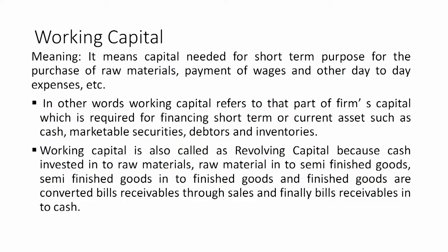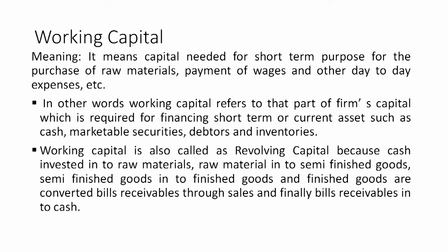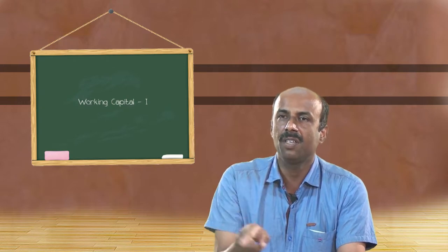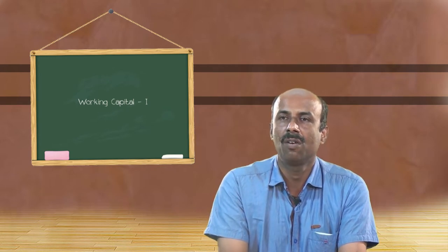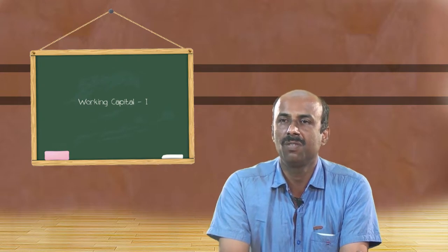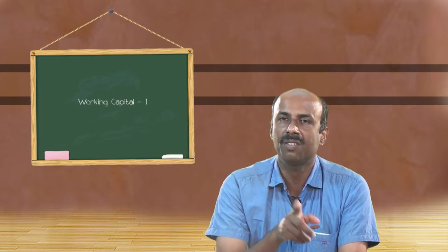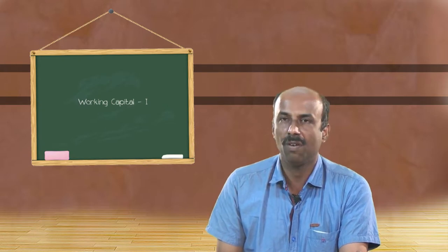Working capital is also called revolving capital, because cash is invested to purchase raw materials; raw materials are converted into semi-finished goods; semi-finished goods are converted into finished goods; finished goods are offered for sale — either cash sales or credit sales. If it is a credit sale, proper documentation is maintained in the form of debtors and bills receivable. Bills receivable, after 90 days, are converted back into cash. So it is always revolving or circulating within the company — that is why working capital is also called revolving or circulating capital.